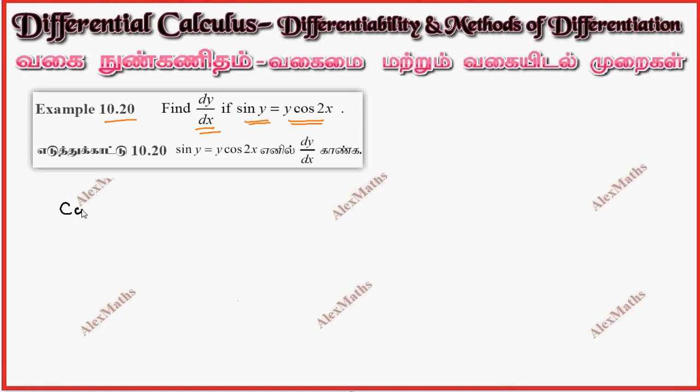Sin y, you have a differentiation cos y into dy by dx equal to, this is uv. So first y term as it is, cos 2x is minus sin 2x into 2 plus cos 2x differentiation of y is dy by dx.